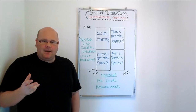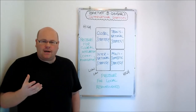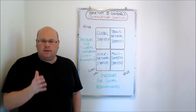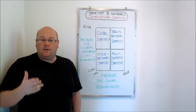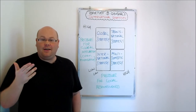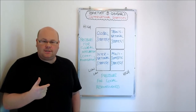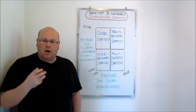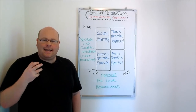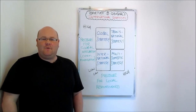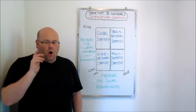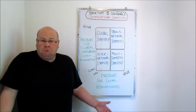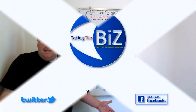So there are Bartlett and Ghoshal's four different strategies. The one a firm adopts depends on what pressures it's under — whether the pressures to be locally responsive are high or low, and whether the pressures to keep costs down and retain a more globally integrated, uniform organization are high or low as it enters international markets. Hope your revision is going well — we'll see you soon for more tutorials.